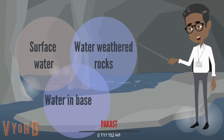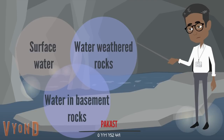Third type: fissure veins. Groundwater is water in basement rocks — fractured veins. Free-flowing underground waters occur at a depth of 50 to 200 meters, in a layer of bedrock solid rocks.